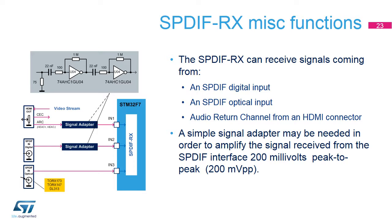The SPDIF-RX can receive signals from an SPDIF digital input, an SPDIF optical input, and an audio return channel from an HDMI connector. A signal adapter may be needed to amplify the signal received from the SPDIF interface (200 mVpp). Using one or two unbuffered inverters can be sufficient in most cases. Note that for SPDIF encoding, the signal polarity can be inverted without affecting the decoding, as only the transitions are used by the receiver.